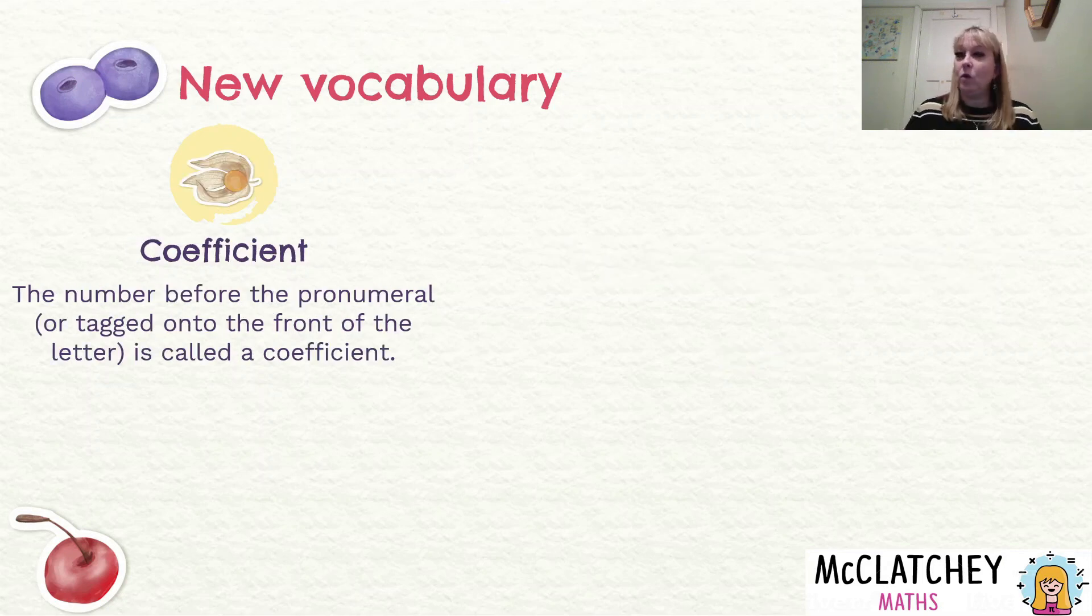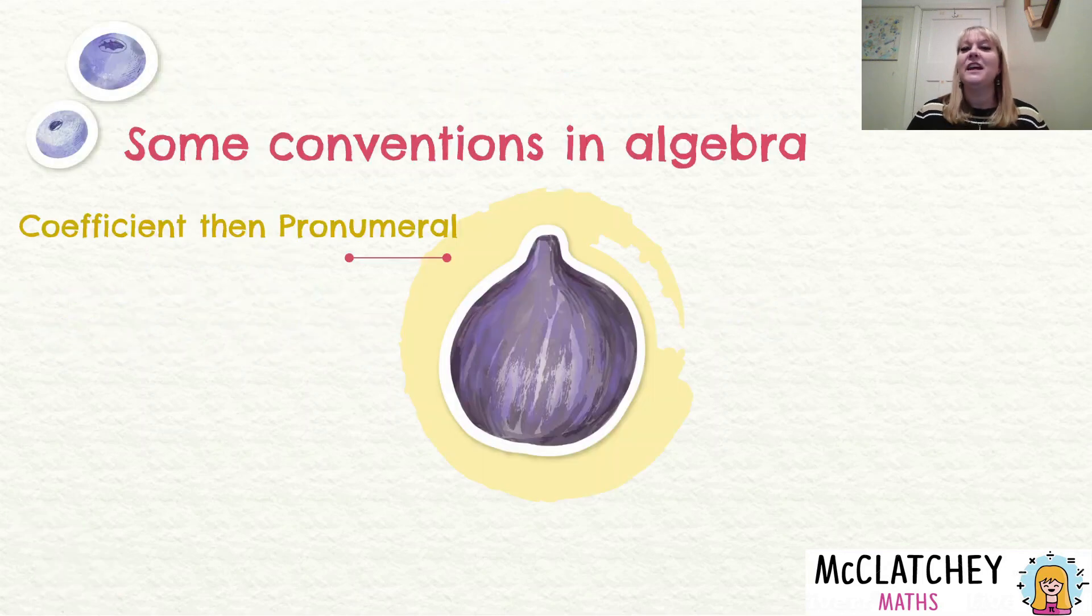Then we've got something called the coefficient, it's a fancy name for the number in front of the letter. So in this particular situation, where x and y are our pronumerals, three and five are our coefficients. So we are going to talk about pronumerals and coefficients in future videos. It's important that you understand the difference between the two. So you may want to go back through this video again, and pause and perhaps write down some of these definitions, so that when you watch future videos, and we talk using the language of mathematics, it will all make sense to you. Okay, so they are our key definitions that we're going to be using for our future.